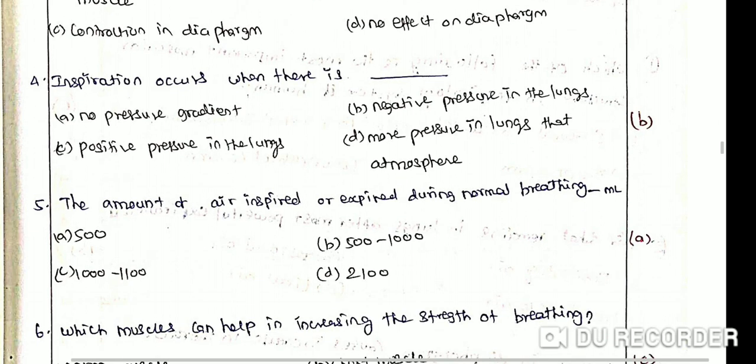The amount of air inspired or expired during normal breathing is tidal volume. The correct answer is 500 ml. Tidal volume is the amount of air inspired or expired during normal breathing. Its volume in humans is 500 ml, out of which 150 ml is dead space volume which remains in the respiratory tract.